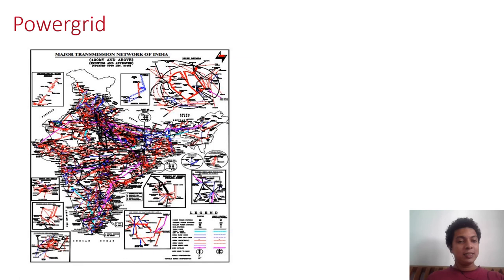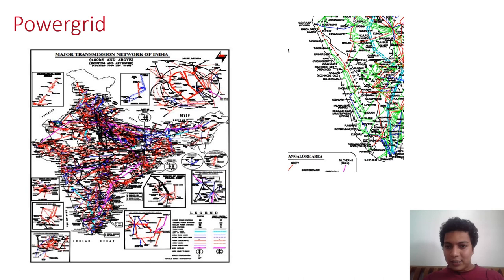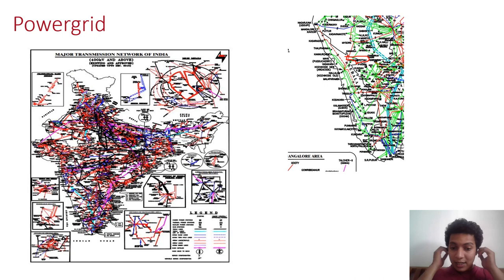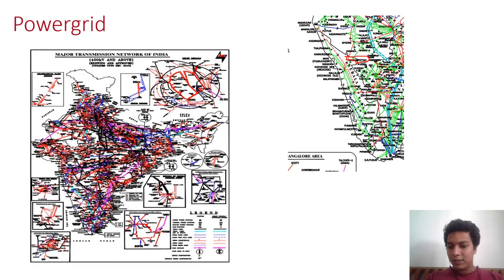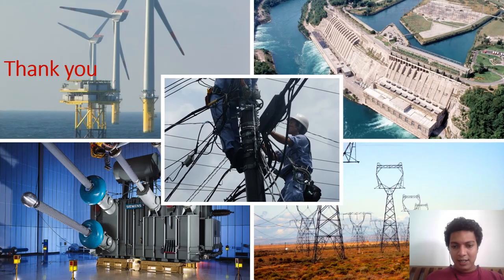The power grid map shows the major transmission lines of 110, 220, and 440 kV and above. Looking at the Kerala map, nearby our college we can see the Kaniyambetta substation appearing on the map. This gives you a small idea about the power system network and the history of power.